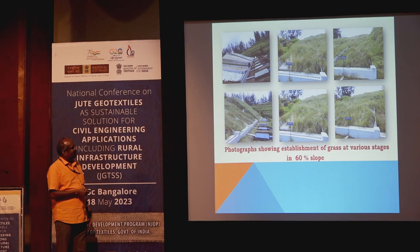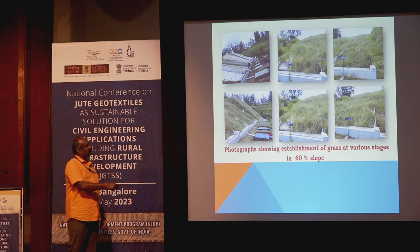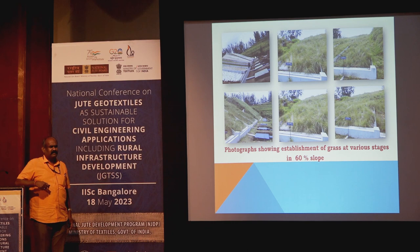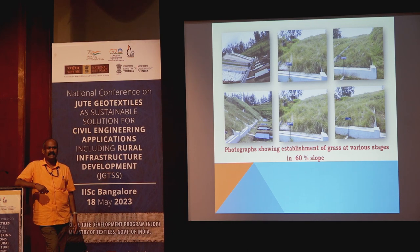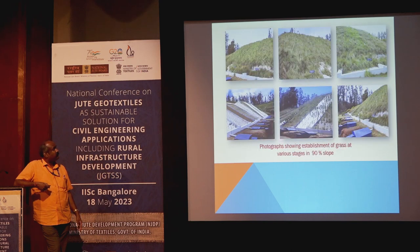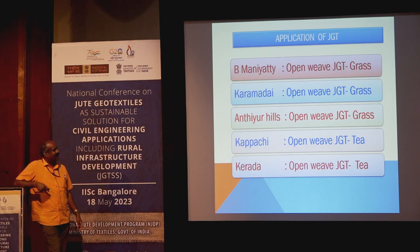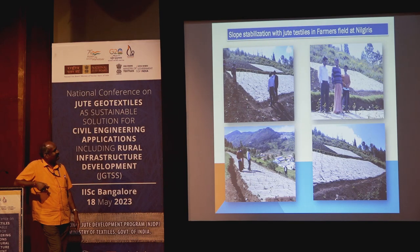Photographs from the 90% slope show how the area progressed from initial planting through various treatments over time. One observation was that in synthetic geotextile plots, vegetation growth was limited. While synthetics are very efficiently used in civil structures, road concrete, and for structural subsidence control — which I fully agree with — when it comes to vegetation growth, synthetic geotextiles are not much helpful. Natural geotextiles play the major role in surface vegetation coverage. Within six months, the treated areas showed remarkable vegetation establishment that is hard to imagine.